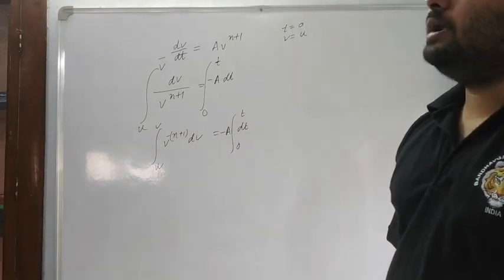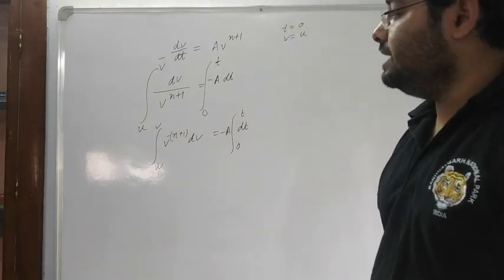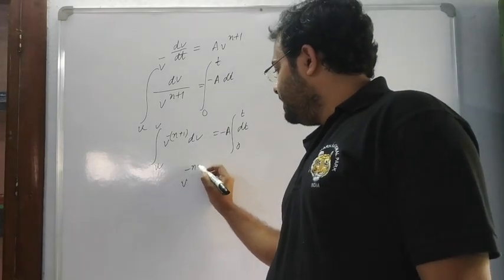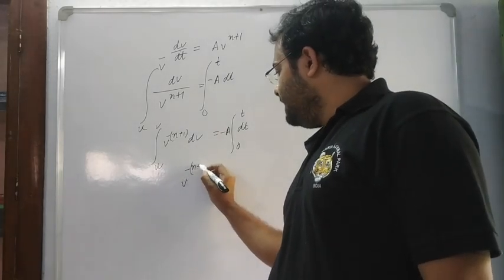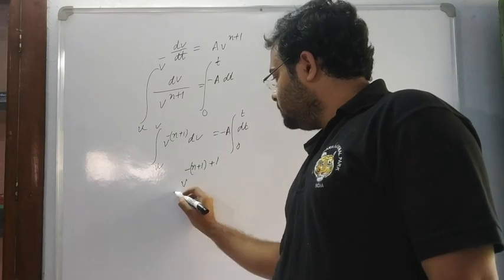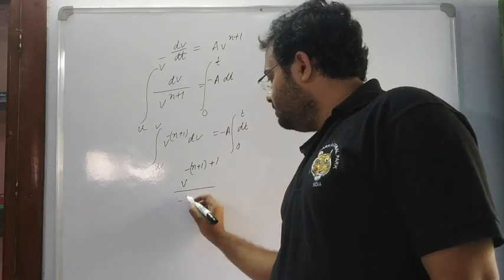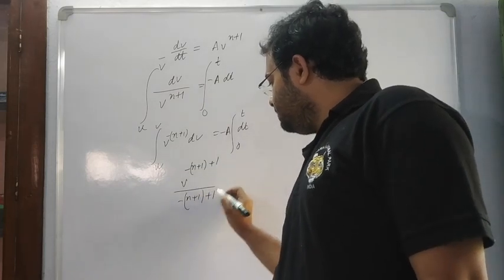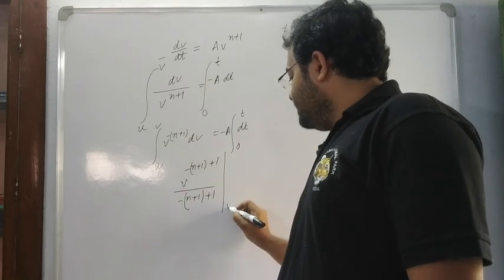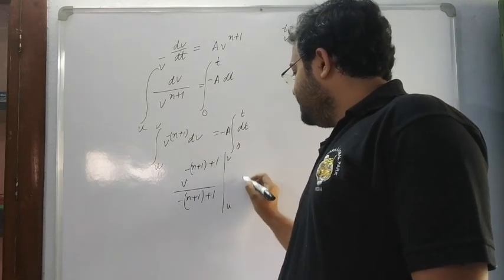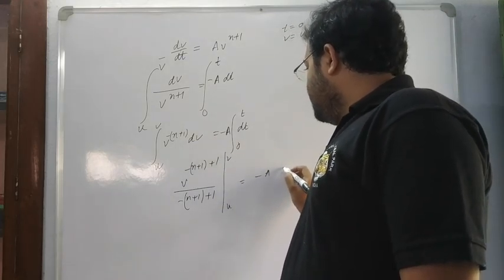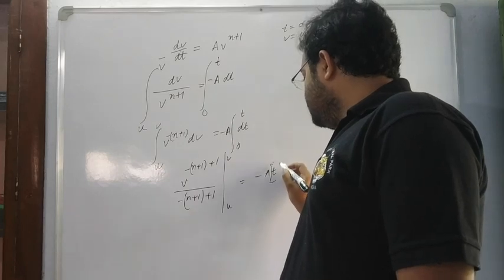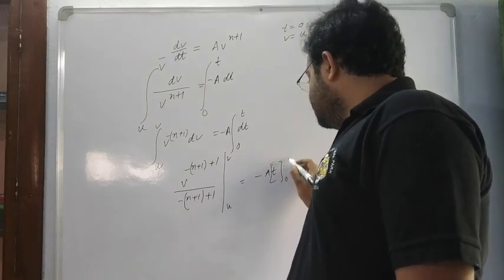Using x to the power n integration giving x to the power n plus 1 by n plus 1, we get v to the power minus n plus 1 plus 1 by minus n plus 1 plus 1, with limits from u to v on the left, and minus a times t with limit 0 to t on the right.